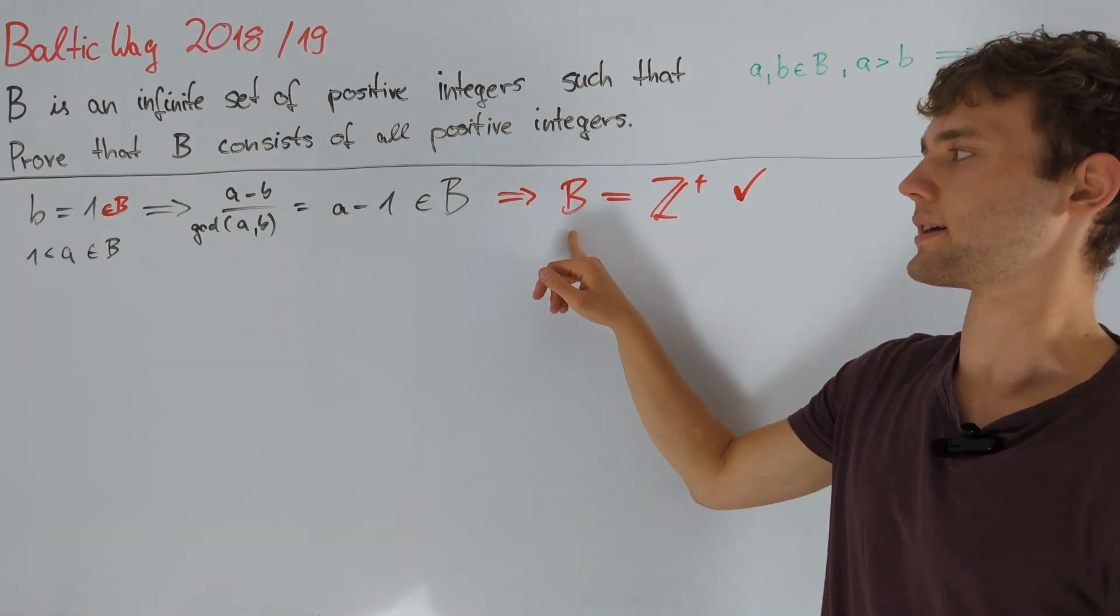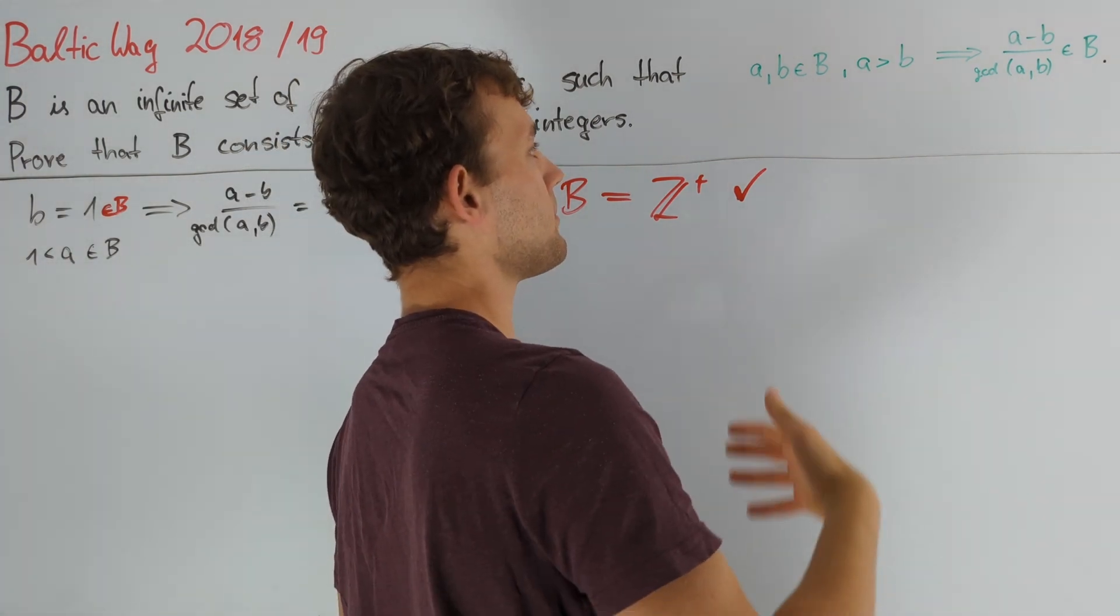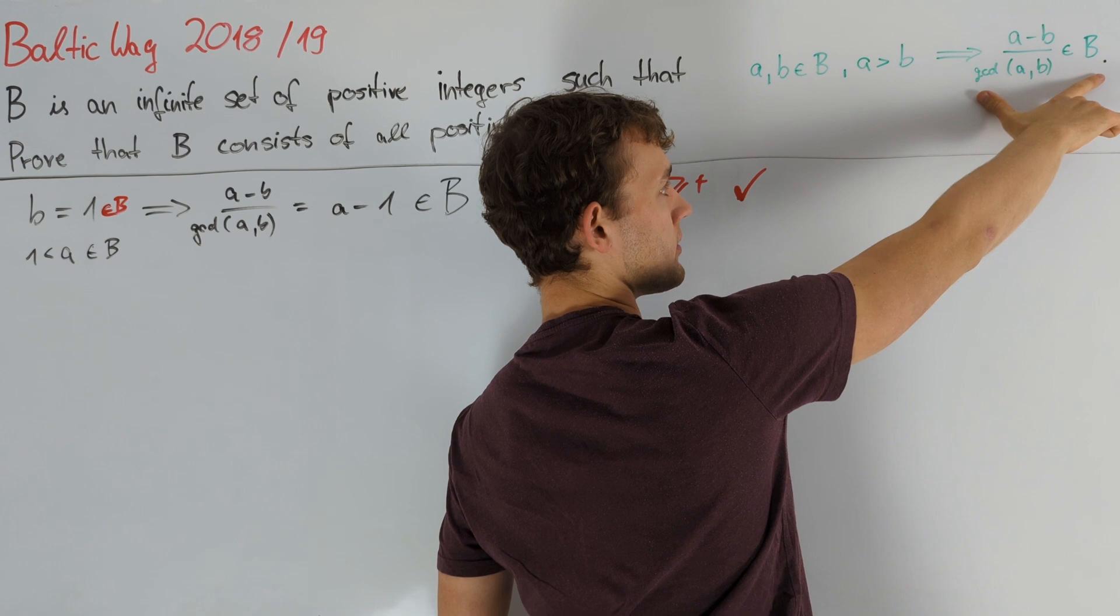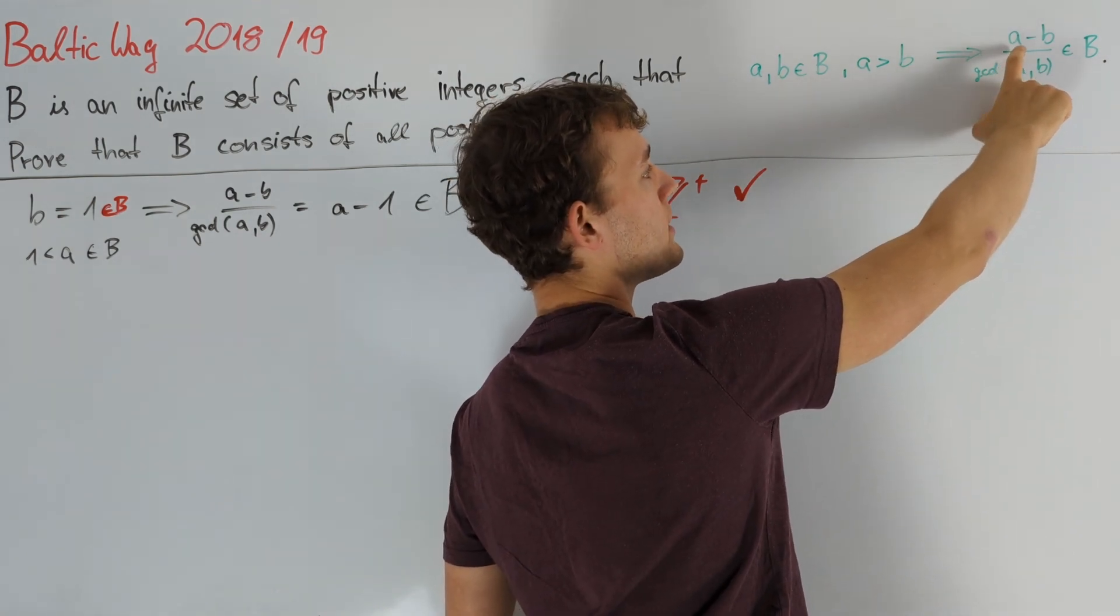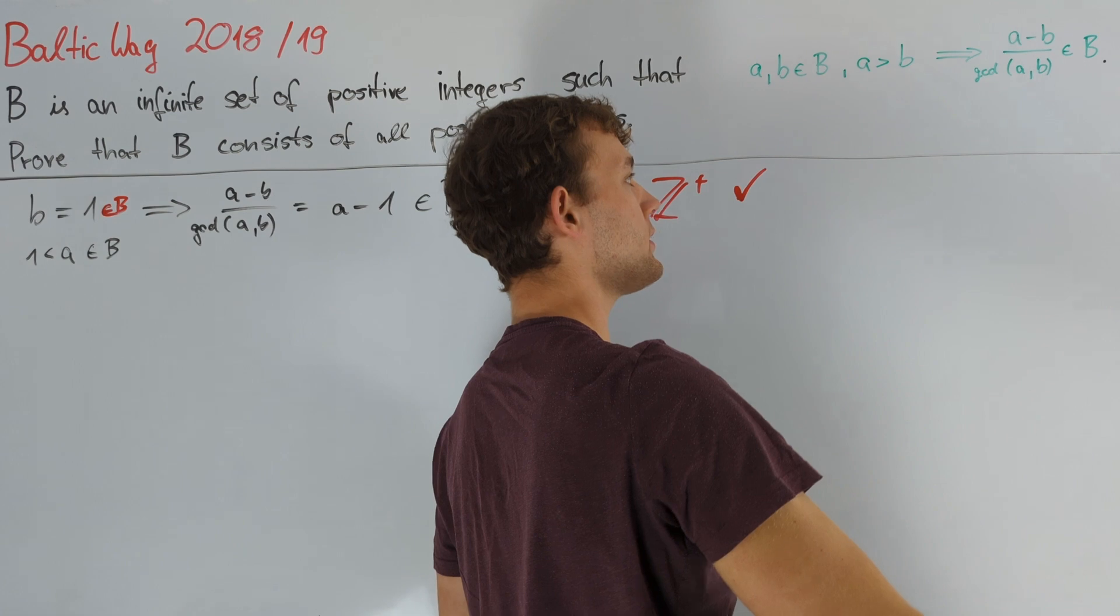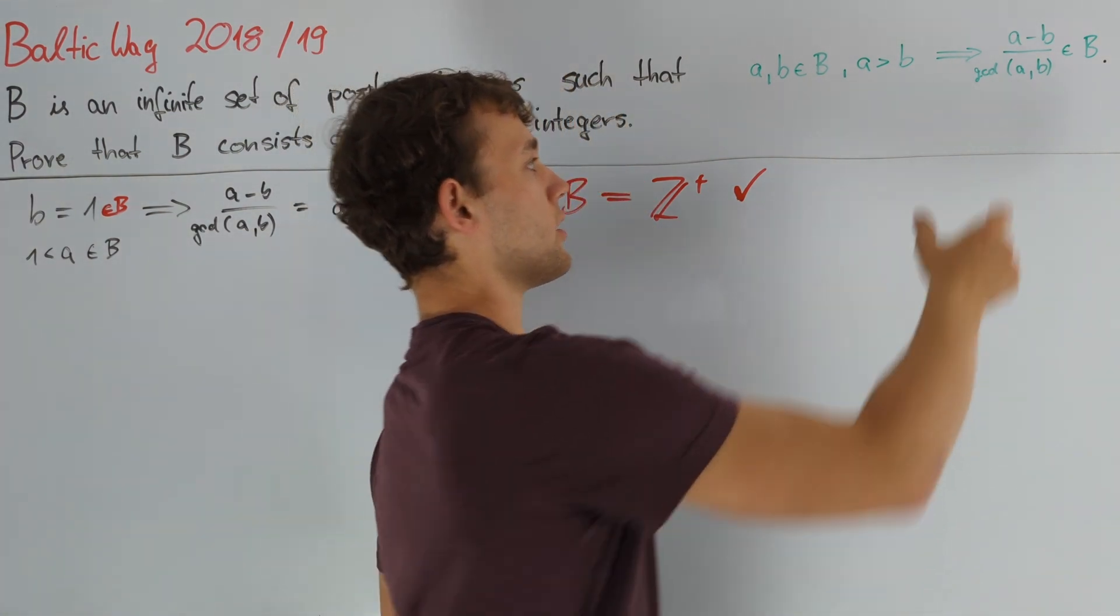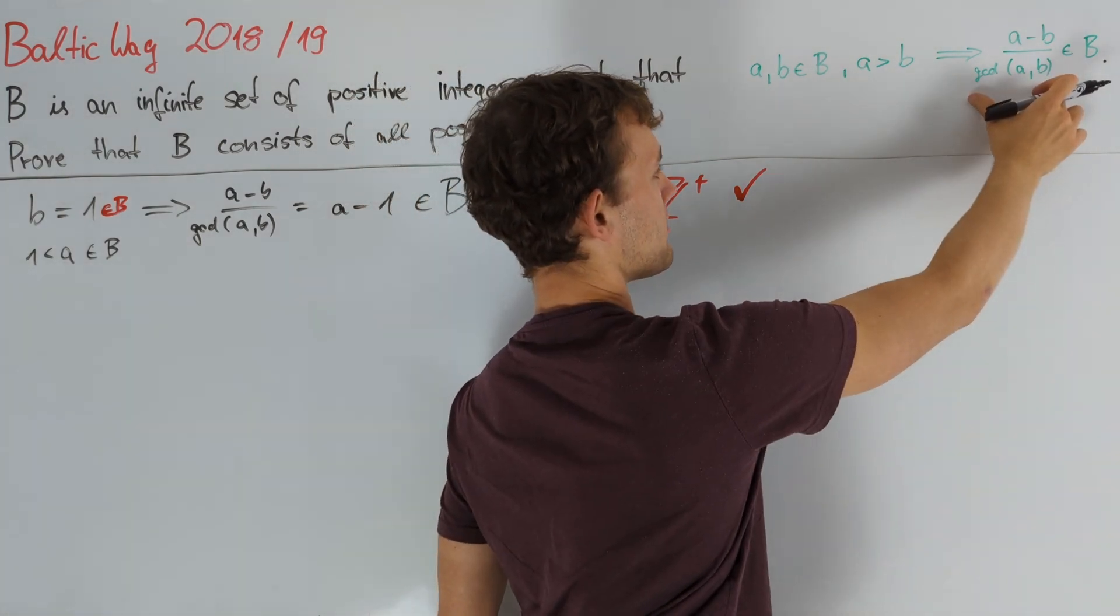Now, taking a look at the given condition, we see that given two numbers in B, we get a new number that must be contained in B. And this is quite small. Namely, we subtract b from a and then even divide by a positive integer. So, this is definitely always less than a.